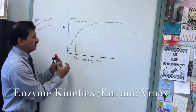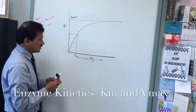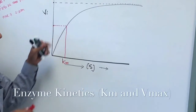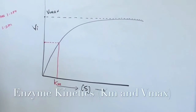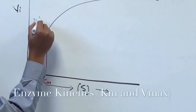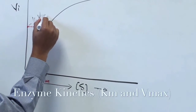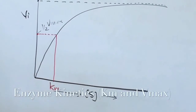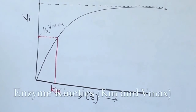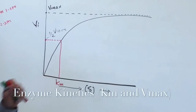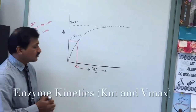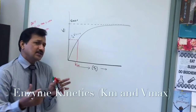By definition, KM is the substrate concentration at which the enzyme reaches half of its maximum velocity — half Vmax. KM is the substrate concentration at which the enzyme reaches half maximum velocity.